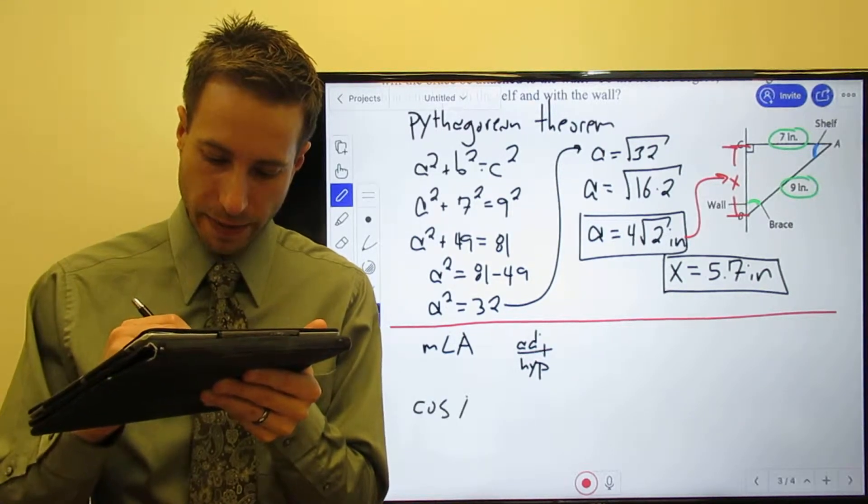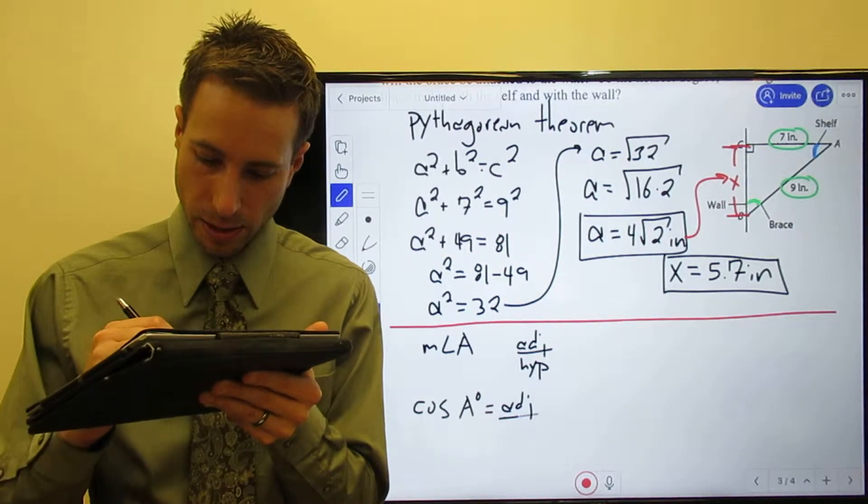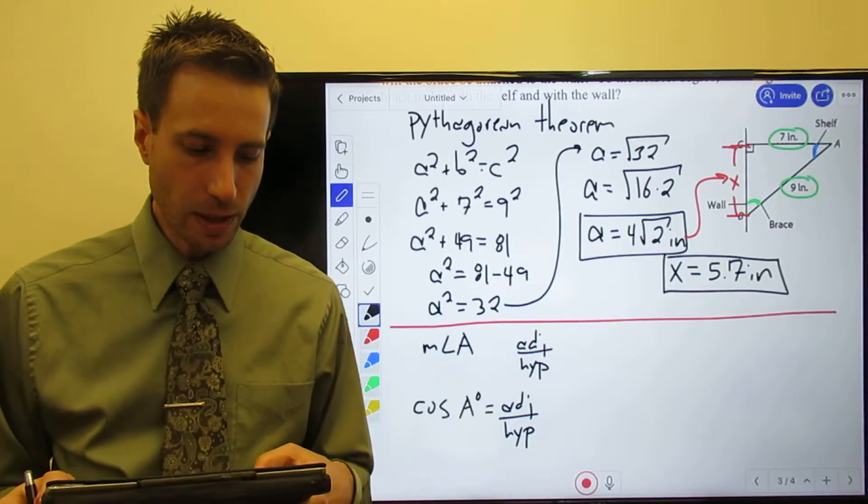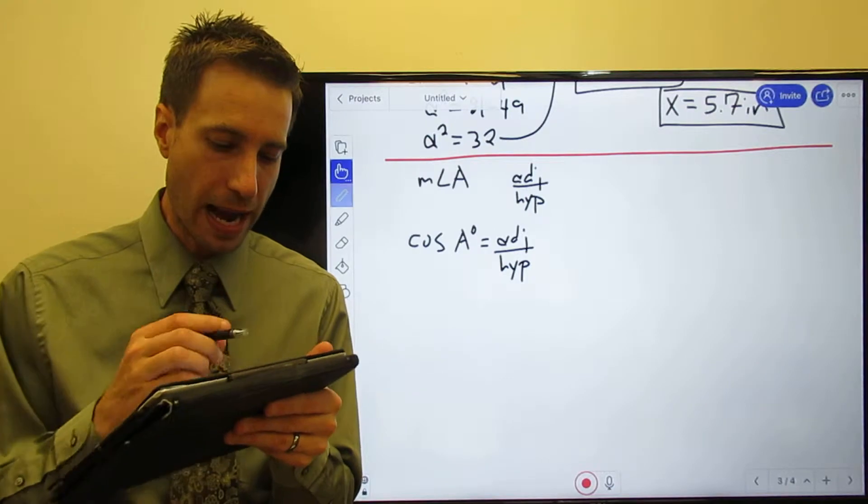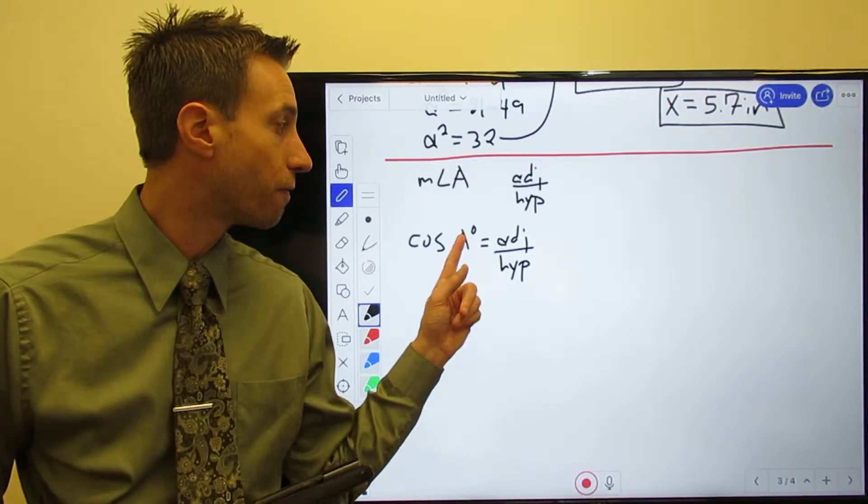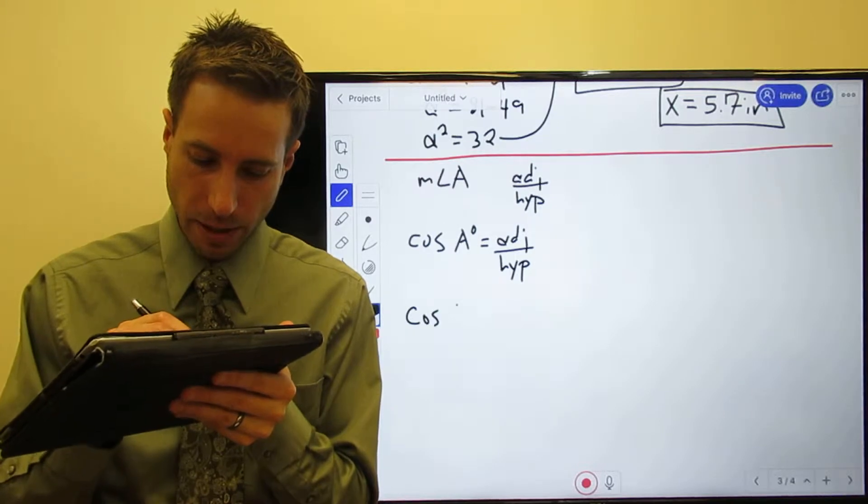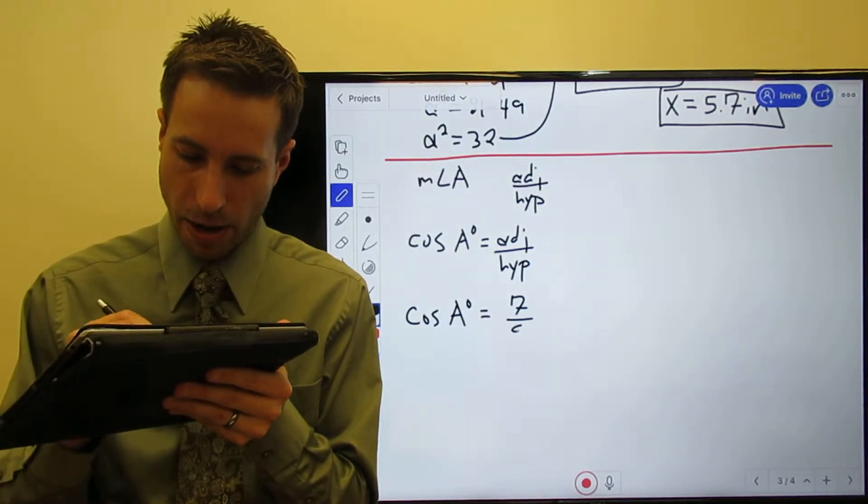The cosine of angle A is going to be the adjacent over the hypotenuse. Plug and chug; don't fat finger something on your calculator. But remember, I am trying to solve for A. So cosine of A equals - remember the adjacent side was 7, the hypotenuse was 9 - 7/9.